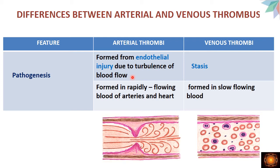Arterial thrombi are mainly formed due to endothelial injury caused by turbulence of blood flow. Normal blood flow is laminar, where blood cells are present in the central compartment and plasma in the outer compartment, so cells don't contact endothelial cells. When turbulence occurs — such as at valves or vessel bifurcations — this laminar flow is disturbed, cells contact the endothelial cells, causing damage, which leads to thrombus formation.